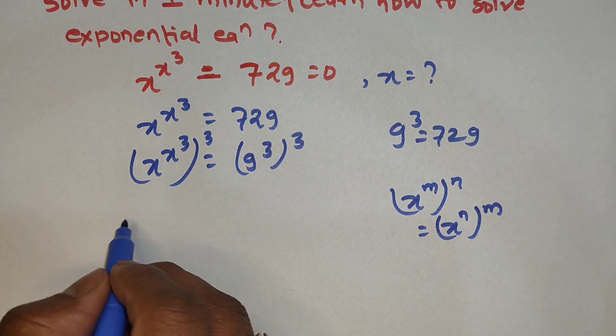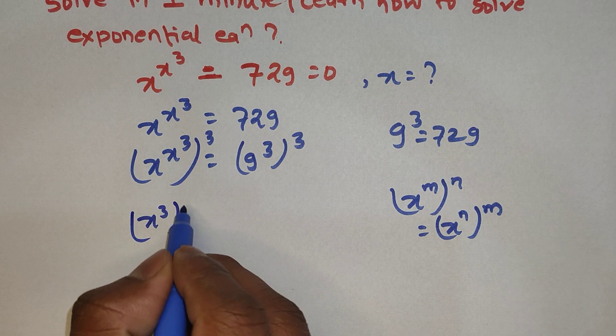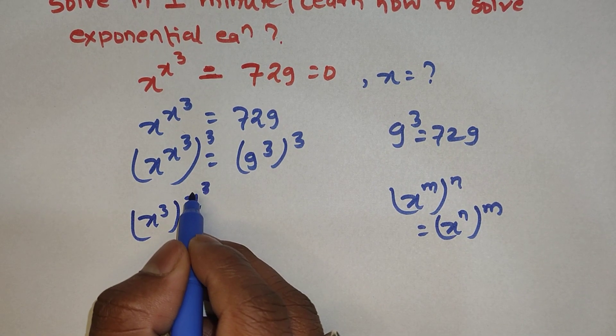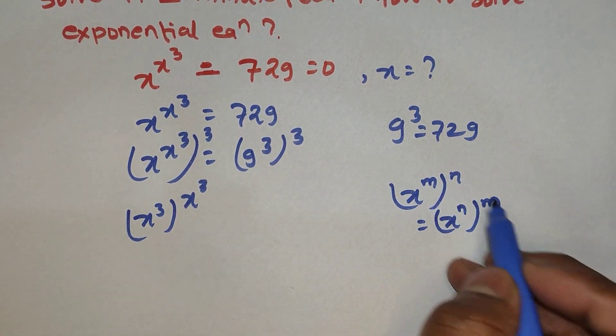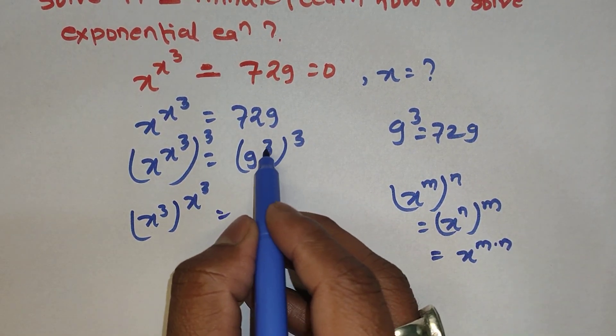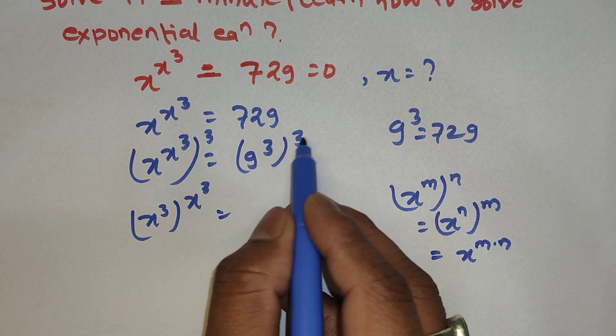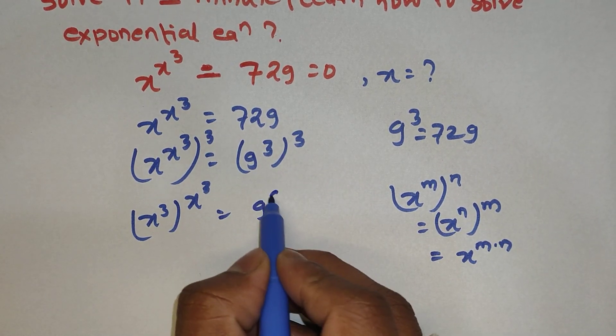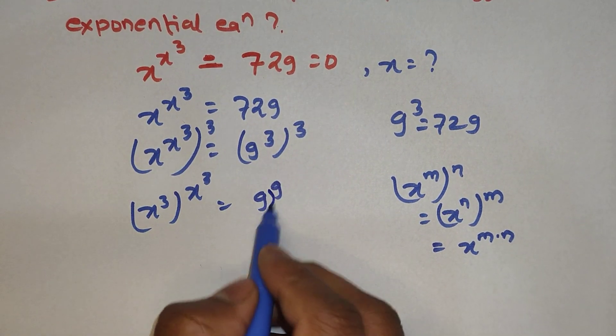We can write this expression as x to the power 3, to the whole power x to the power 3. And here it also equals m times n, so we can multiply these exponents - that is, 9 to the power 9.